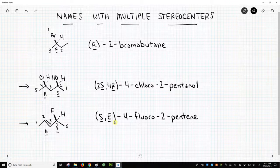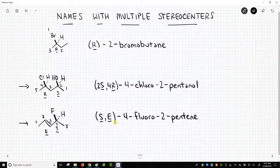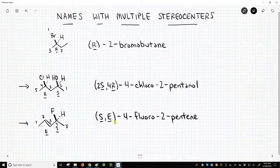So this is how we handle names of molecules that include multiple stereocenters. If we have multiple R's and S's or multiple E's and Z's, we have to put a number in front to indicate the position of that particular configurational assignment. That's all for now. Thank you.